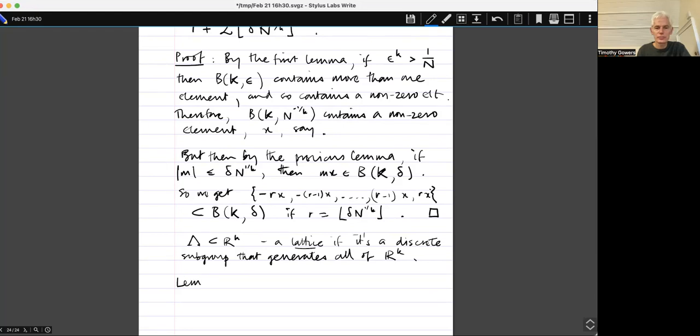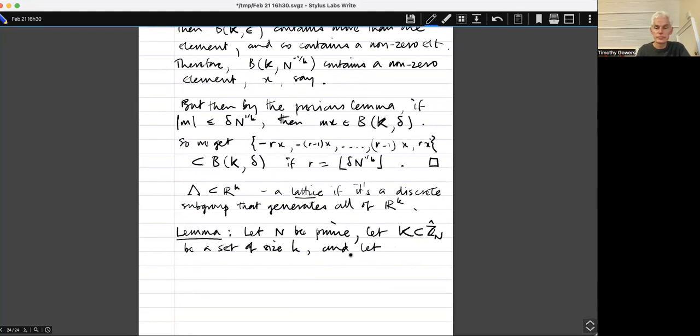So now let's state the lemma. Let N be prime. Let K inside ZN hat be a set of characters of size little K. And let, let's, I want another integer. So let R be a positive integer. And let nought less than Delta less than 1 over 2 R.